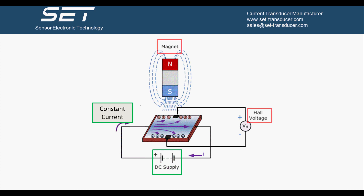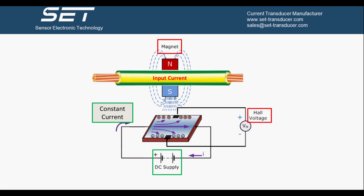In this case, the change of the Hall Voltage reflects the change of the magnetic field strength. The magnetic field is generated by the input current, which has a clear proportional relationship between the magnetic field and the input current. Therefore, by measuring the Hall Voltage value, the input current value can be derived. This is the basic principle of measuring current intensity using Hall Effect elements.